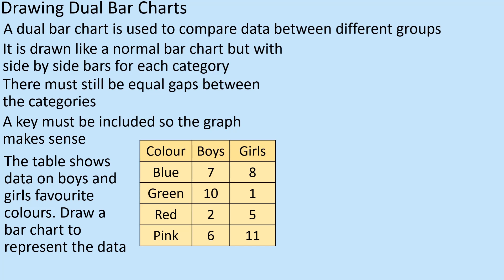So we've got colours: blue, green, red and pink - favourite colours, very typical. Boys prefer green in most cases, and girls prefer pink. How typical is that? This is not necessarily representative of the whole nation, but we'll work with it as it is.